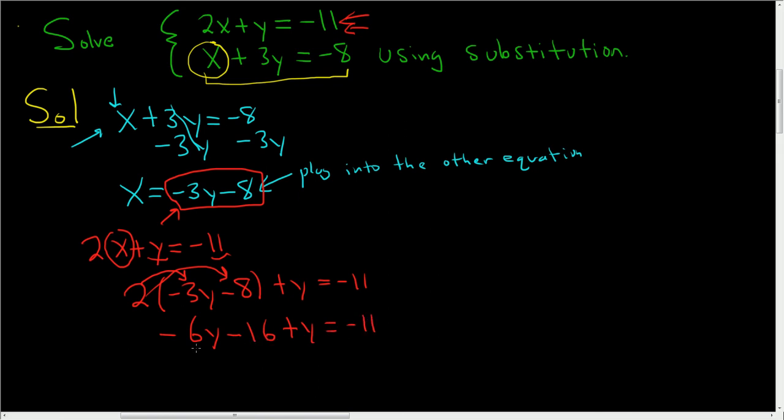Combine like terms if we can. Looks like we have a negative 6y and a positive y, so that's negative 5y minus 16 equals negative 11.